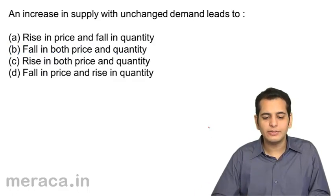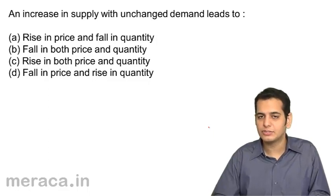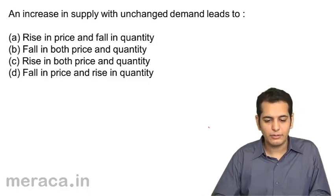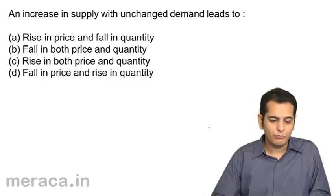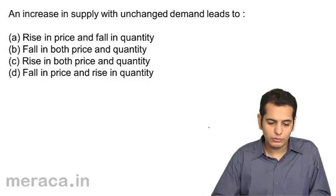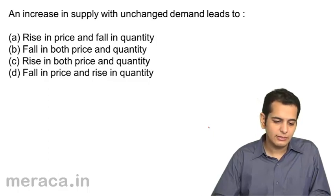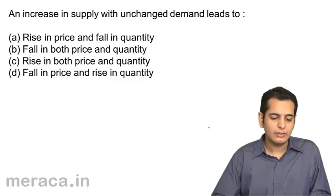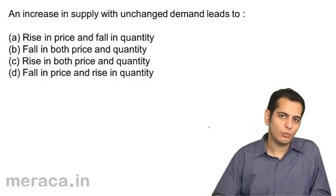An increase in supply with unchanged demand leads to — a) a rise in price and fall in quantity, b) fall in both price and quantity, c) rise in both price and quantity, d) fall in price and rise in quantity.